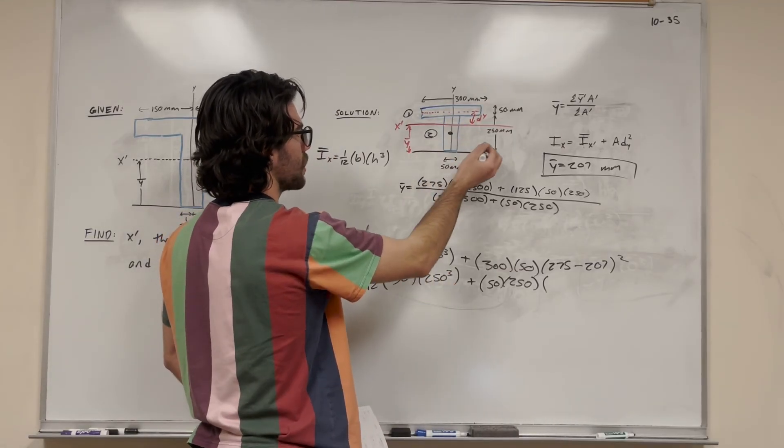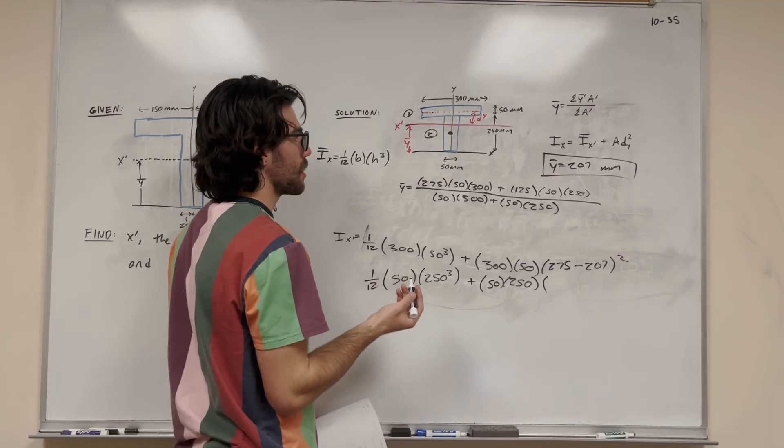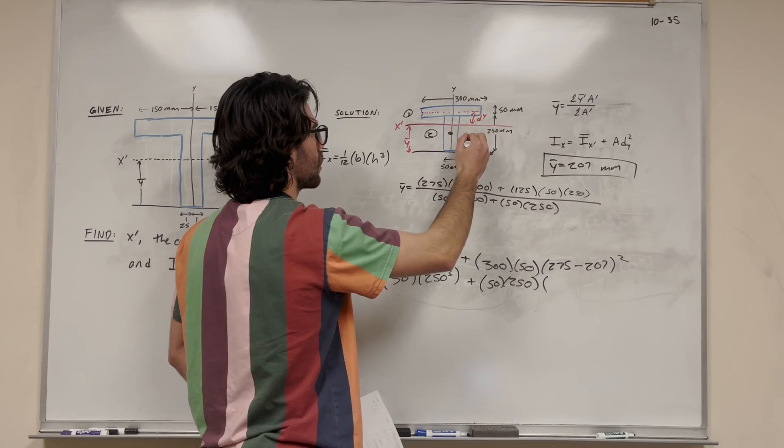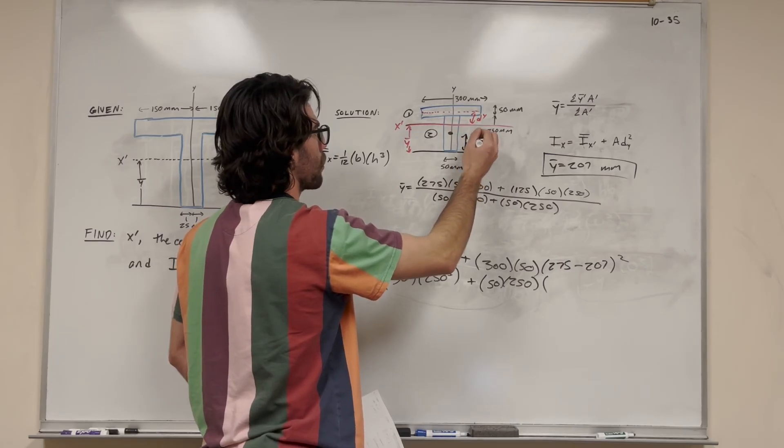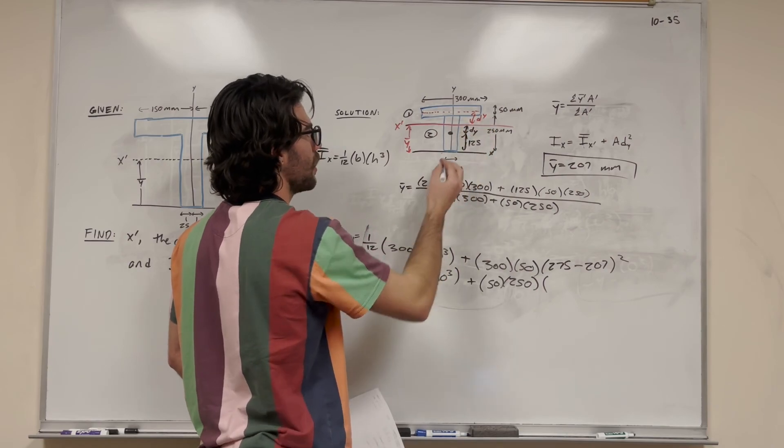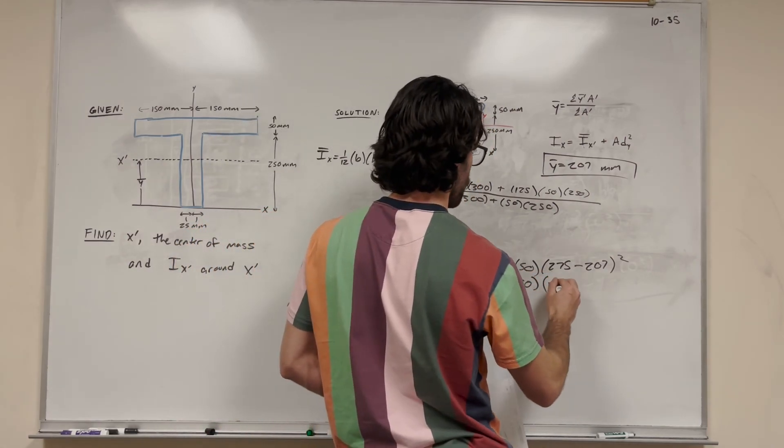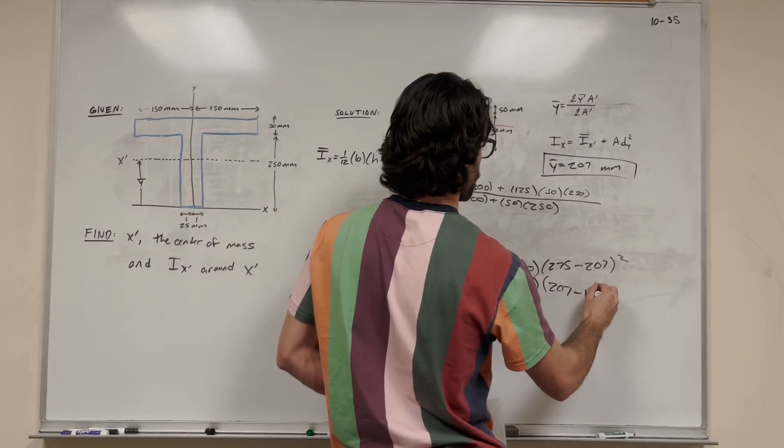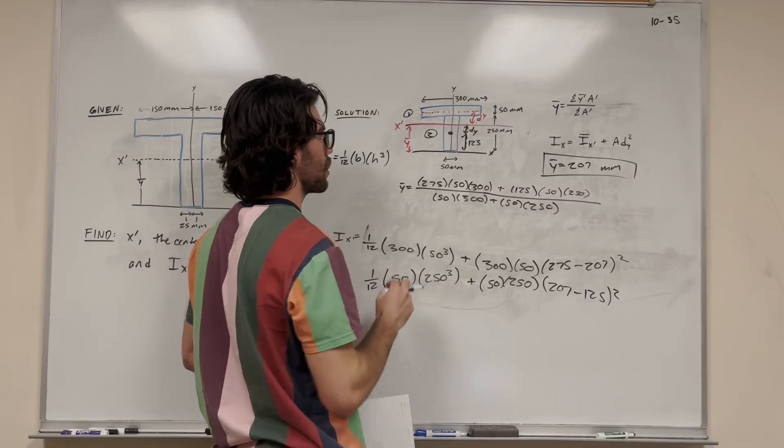So the distance of this one, right, the center of mass of this is 125 millimeters, since the whole height is 250. So we know that this is 125 millimeters, and we're looking for this distance now. This is distance y. So if we take 207, which is where this bar is at, and subtract 125, we're going to get the distance between those two.